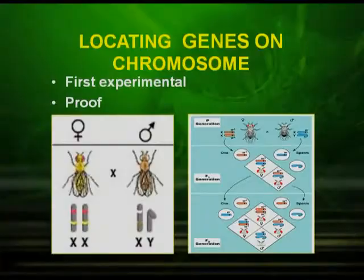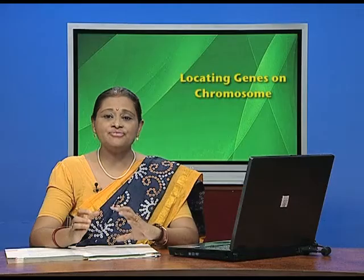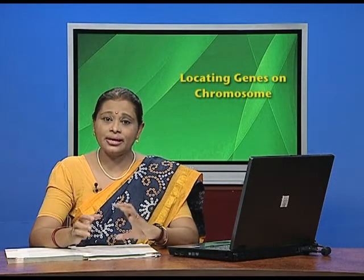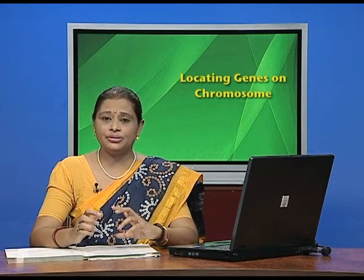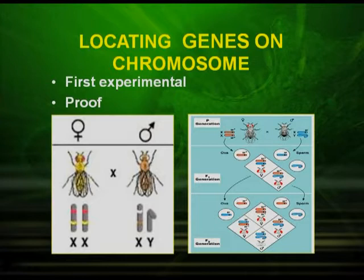In the parent generation, the red-eyed and the white-eyed were crossed. The red-eyed was the dominant one and the white-eyed was the recessive one. In the F1 generation, he obtained all red-eyed Drosophila. Now let us see what happened in the F2 generation. In the F2 generation, he observed a 3:1 ratio — three red Drosophila and one white Drosophila.